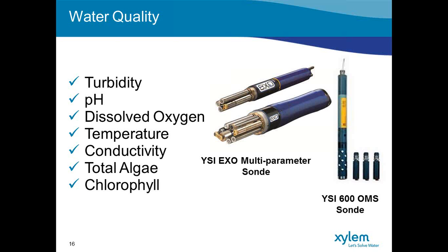Basic parameters like dissolved oxygen, temperature, conductivity, and pH are used to understand the general health of the water before and after storm events. One more thing about the EXO, particularly for stormwater monitoring: they are probably the most rugged sondes out there. They have full titanium bodies, welded at the factory, and many anti-fouling and corrosion-resistant materials, making the EXO an ideal stormwater instrument. The output protocols of these instruments are very friendly with other data acquisition systems and samplers.